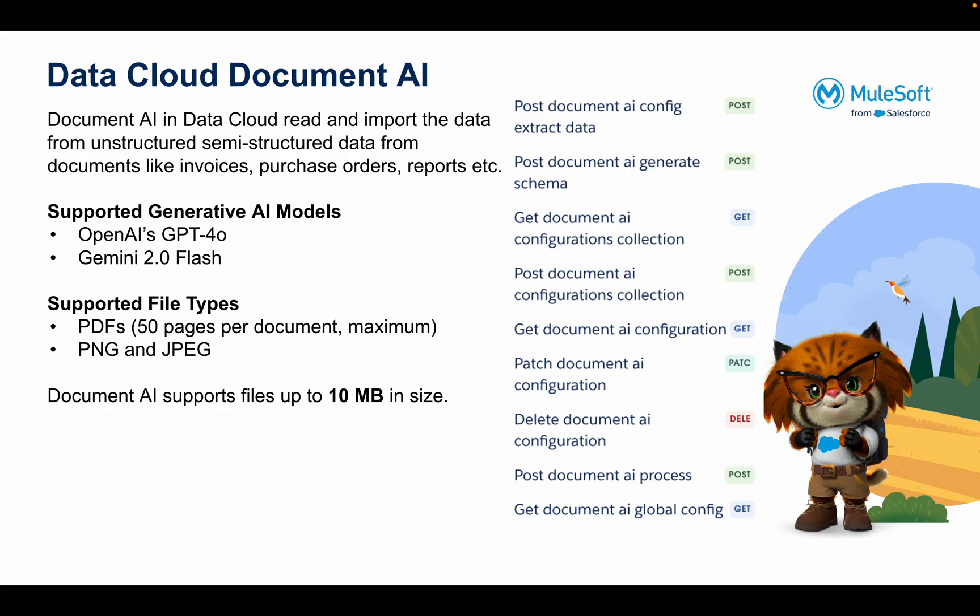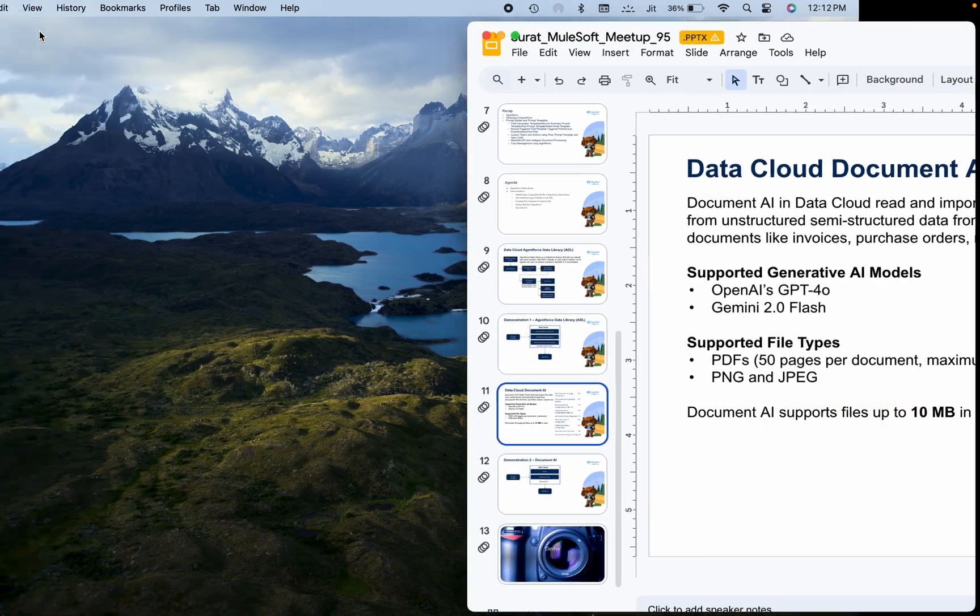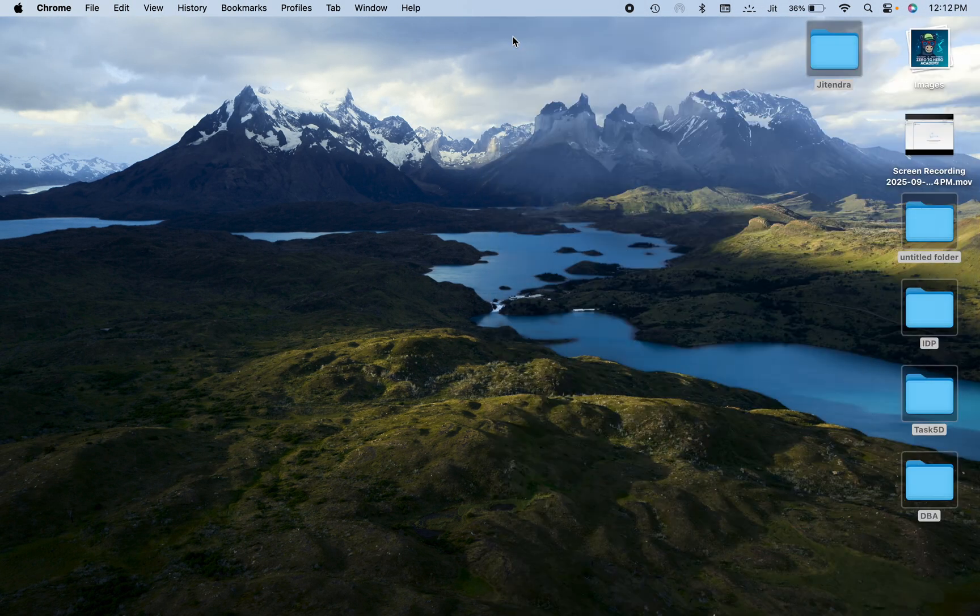We will be using the graphical user interface for extracting information from the document. What we'll do is log into Data Cloud, navigate to something called Unstructured Data, upload the document, generate the schema for that particular document, and then extract the information from it.